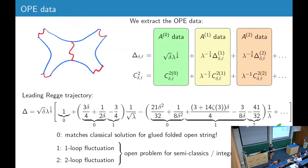Okay, and the final thing we can compare is the OPE data. We can compute all this OPE data, these corrections to the dimensions and OPE coefficients, and for the leading Regge trajectory, this is what we get, where delta is the mass level. So we have here the first correction, the second correction, and for each correction, there are certain terms that can be computed, compared to a classical solution for a glued-folded open string.